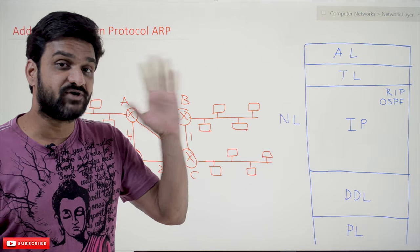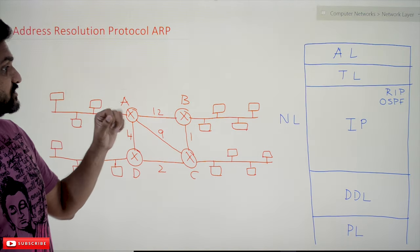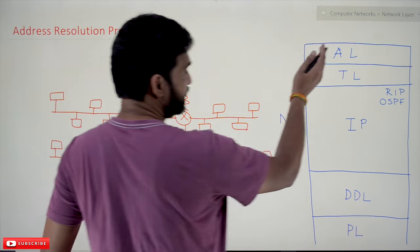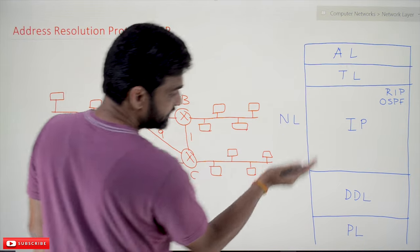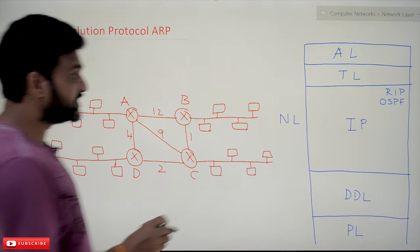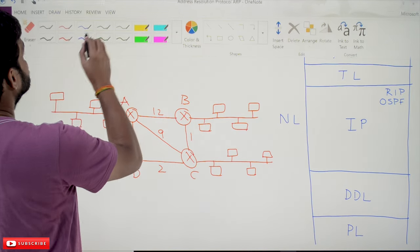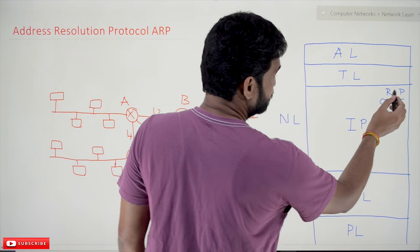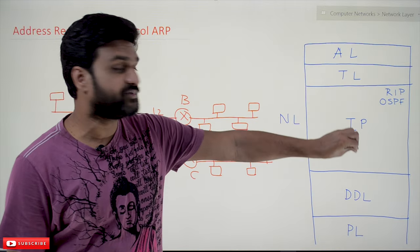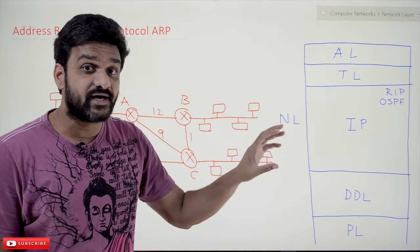We'll try to take a real-world example and understand how things will happen in reality — in a very practical way. These are all the layers: application layer, transport layer, network layer, data link layer, and physical layer. In the network layer section, we have seen different protocols like IP (Internet Protocol), and also RIP and OSPF, which are routing protocols covered in previous videos.